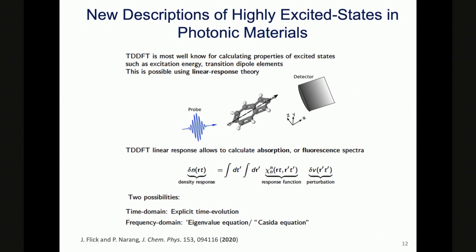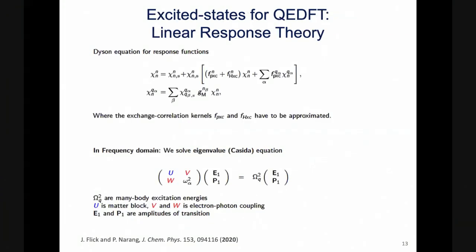When we think about the response function, we can explicitly evolve in time — which has limitations around memory and propagation time — or go to an effective frequency domain and think about it as an eigenvalue or Casida equation. The corresponding Casida equations now have two exchange-correlation kernels that need to be approximated, in contrast to the standard case with only one: one corresponding to the photon-electron coupling and one corresponding to the standard electronic problem.